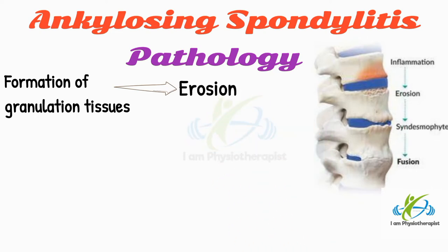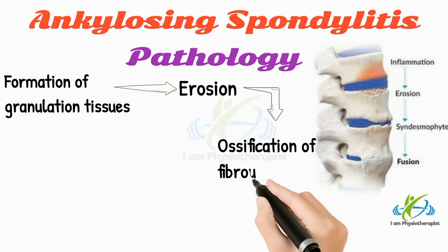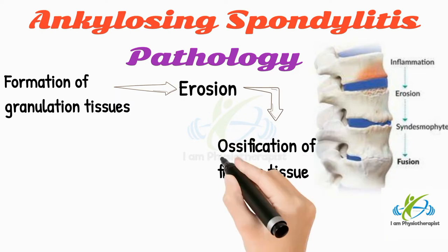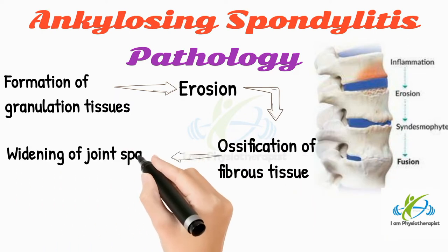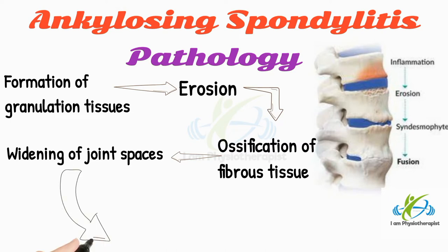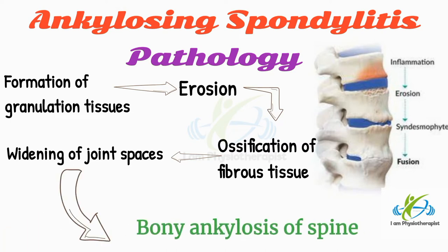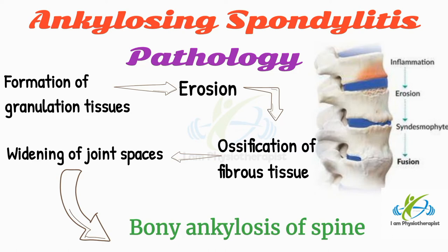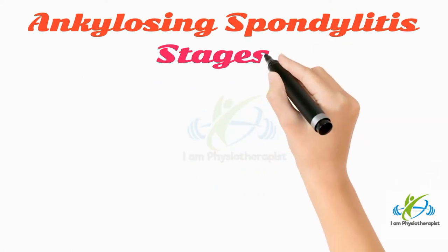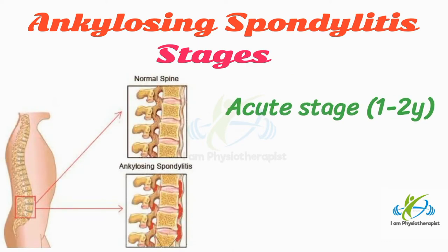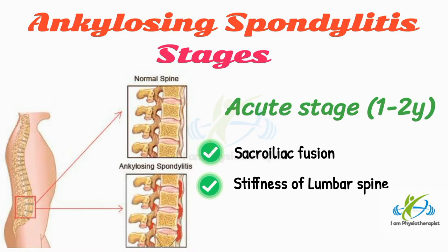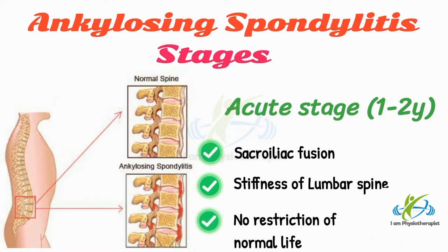Pathological changes follow a constant sequence: first, inflammation of the sacroiliac joints, then formation of granulation tissue and erosion of articular cartilage occurs. With the passage of time, ossification of the fibrous tissue occurs, leading to widening of joint spaces and bony ankylosis of the spine. Articular cartilage, synovium, and ligaments of vertebral joints may be affected.